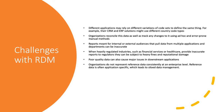The biggest challenge organizations face with reference data is that different applications maintain their reference data in a siloed manner. Different applications rely on different variations of code sets to define the same thing. For example, a CRM and ERP application might use different country code types — one could be using ISO 2 codes and the other ISO 3. There are also many examples where different applications have different marital status codes or gender codes.